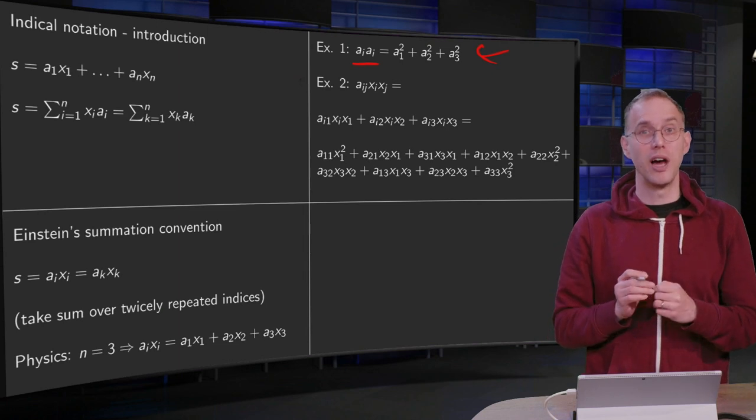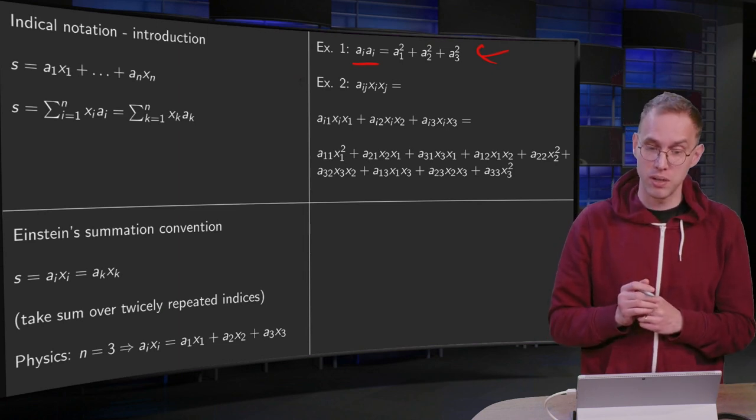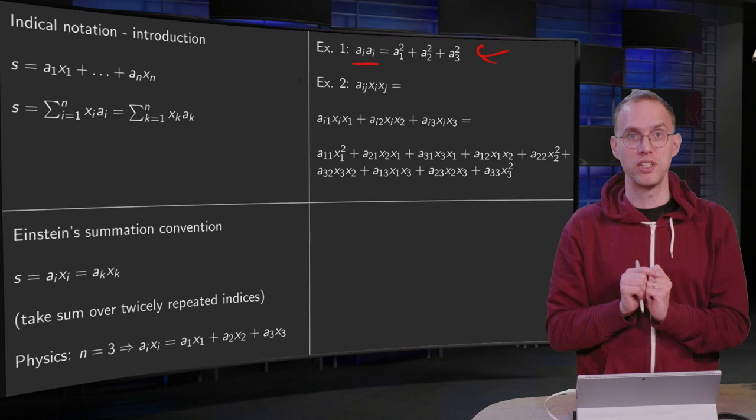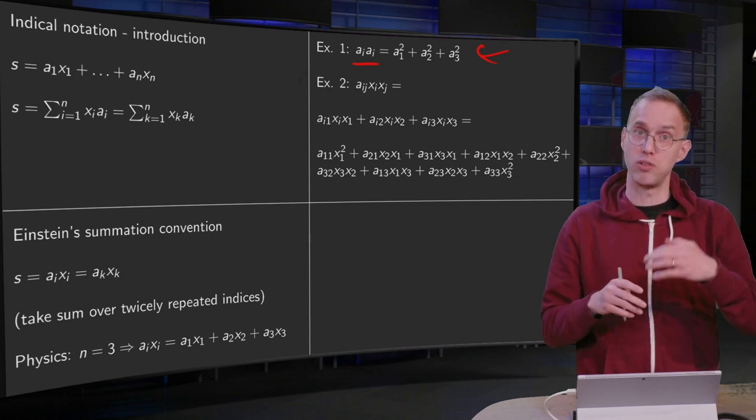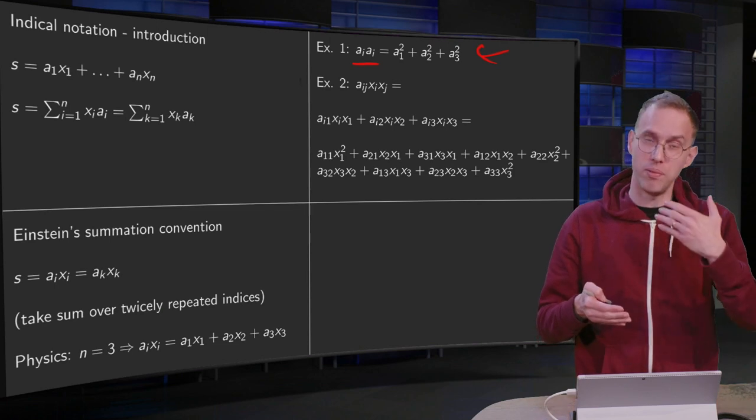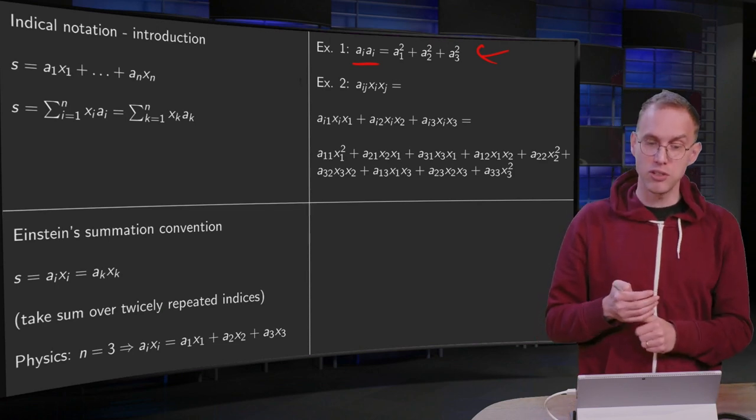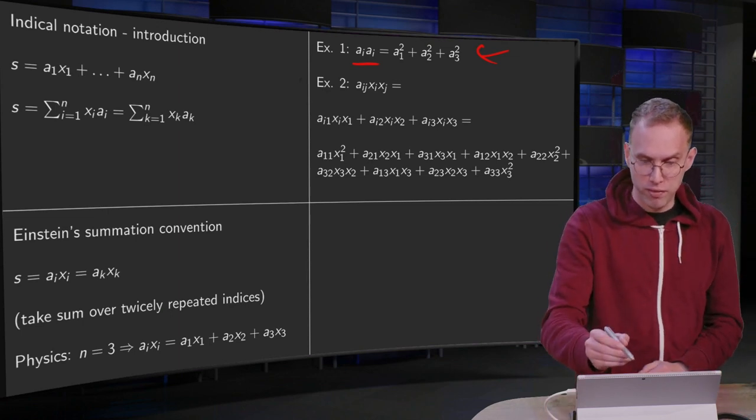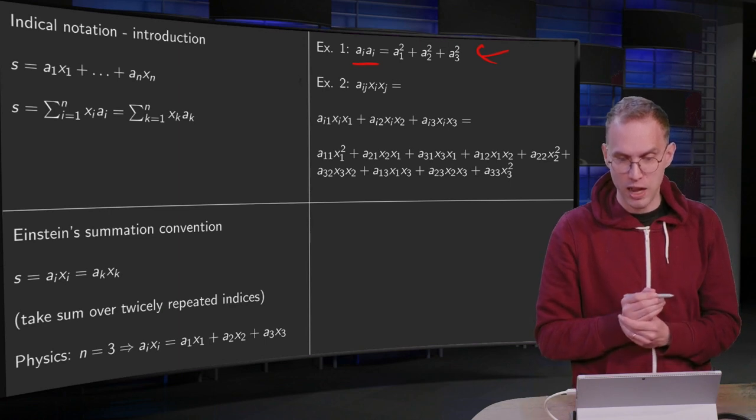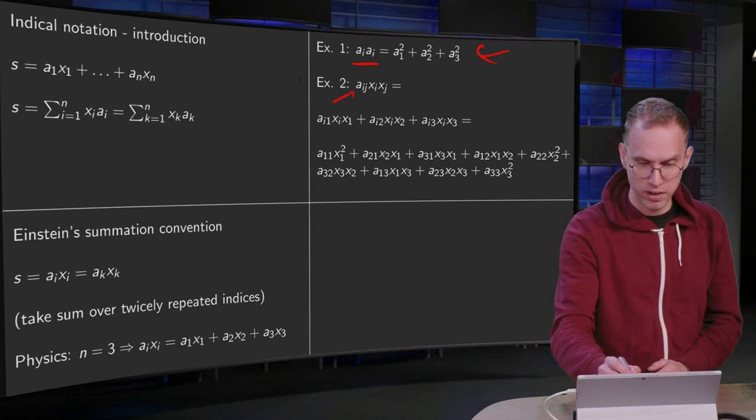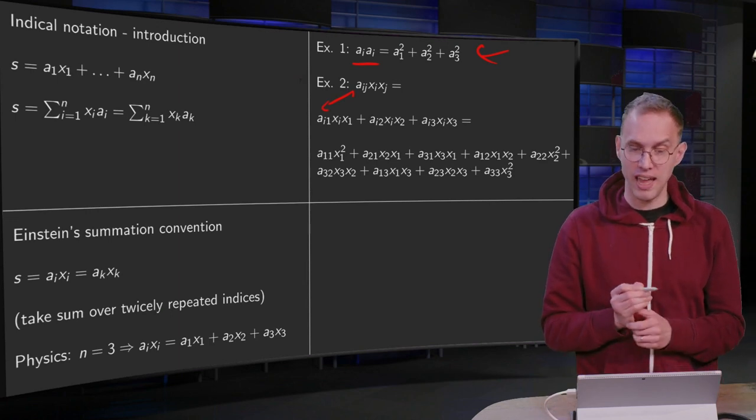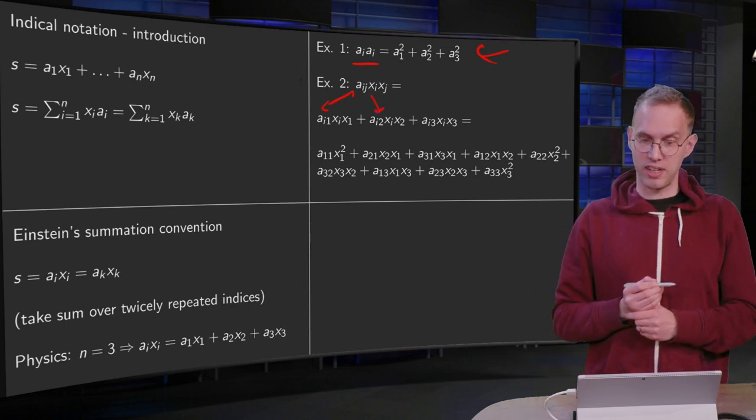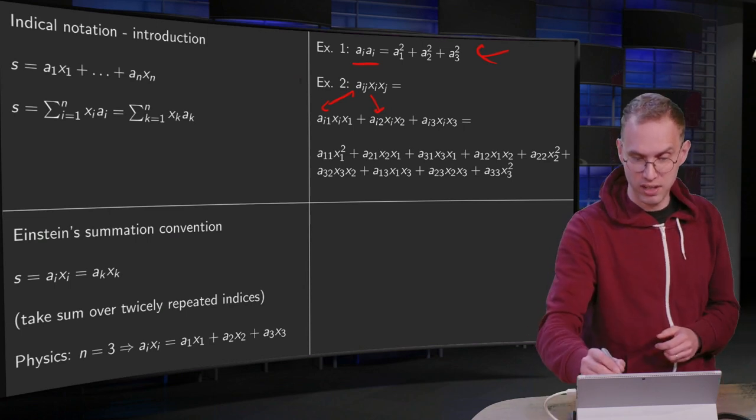Second example. Now we have two indices occurring twice both, so we have an aᵢⱼxᵢxⱼ. So the i occurs in two places and the j occurs in two places, so we have to sum over i from 1 to 3 and we have to sum over j from 1 to 3. Let us do the summation over j first. So our first term for j equals 1 we have an aᵢ₁xᵢx₁, and then j equals 2 we have an aᵢ₂xᵢx₂, and then j equals 3, aᵢ₃xᵢx₃.